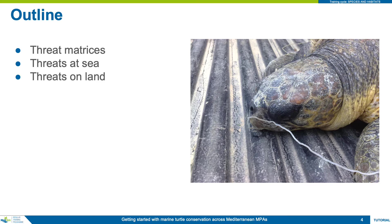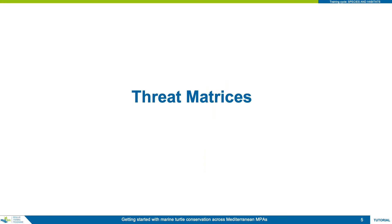Next, we will explore terrestrial threats that impact nesting adult turtles, their incubating nests and the emerged hatchlings. And lastly, we will look at the conservation status of the two species of turtle nesting in the Mediterranean. From Module 1, you learned about marine turtles and their lifecycle and therefore you will be able to appreciate how and where different threats will impact on their survival.